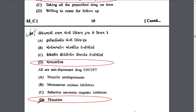Which of the following is not an antidepressant drug? The answer is D — thiazides. Antidepressants are of four types: SSRIs (selective serotonin reuptake inhibitors), SNRIs (norepinephrine receptor inhibitors), TCAs (tricyclic antidepressants), and MAOIs (monoamine oxidase inhibitors). Thiazides are a type of diuretic.